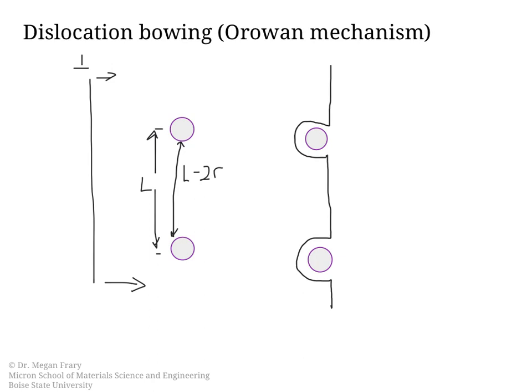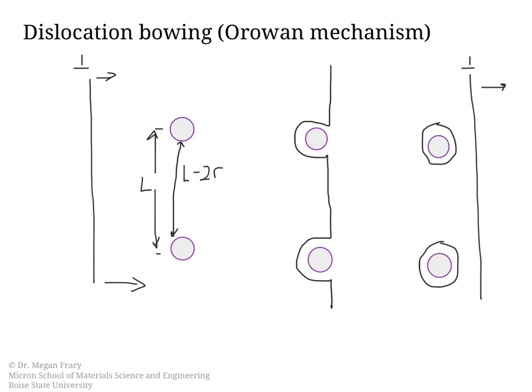This reminds us of the Frank-Reed source. The dislocation keeps going, and what we end up with is a dislocation loop around the particle and a straight dislocation line which can keep moving. If another dislocation were to come along, it would interact first with the dislocation loop and also with the particle before continuing. This really slows down the dislocations as they are moving along.